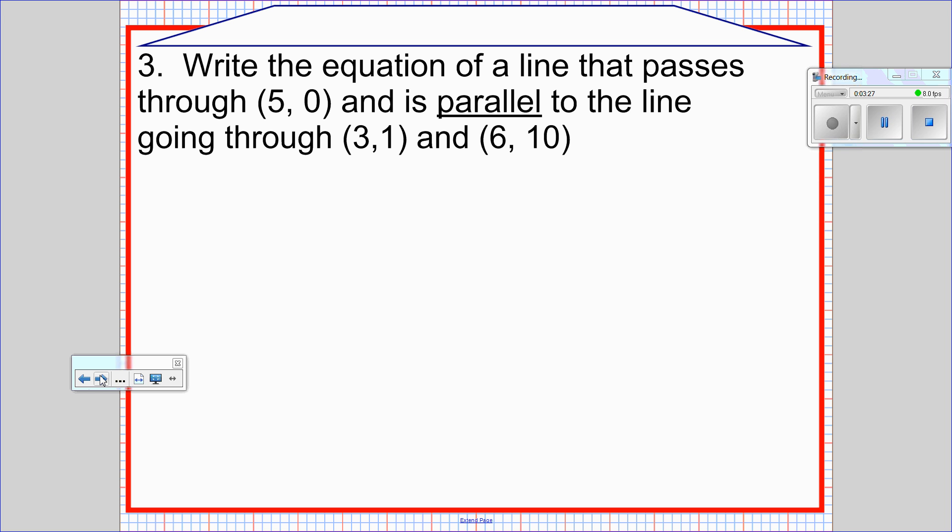Write the equation of a line that passes through 5, 0 and is parallel to the line going through 3, 1 and 6, 10. So here we actually have to compute a slope. We're going to rely on what we learned earlier.